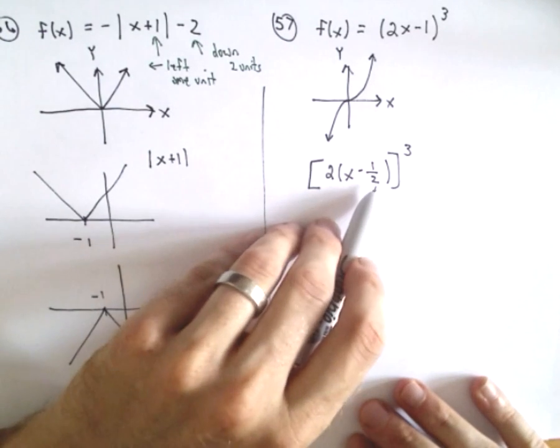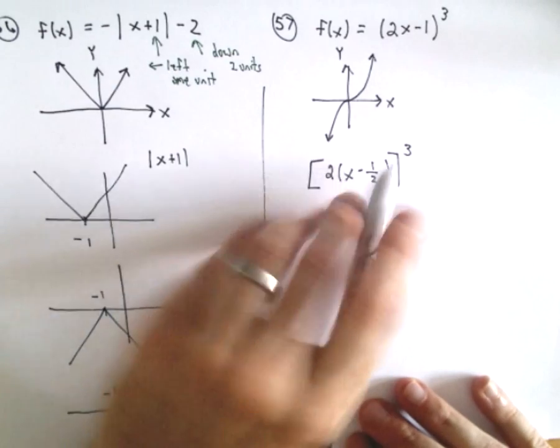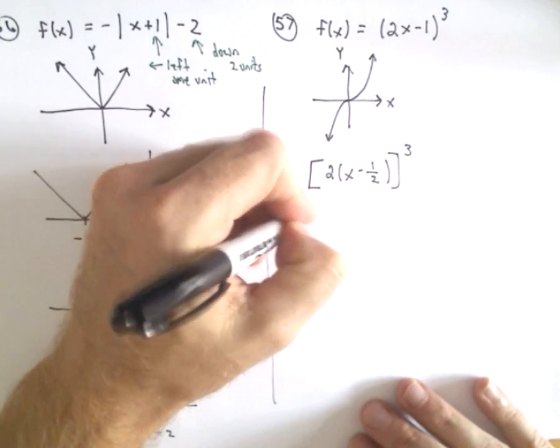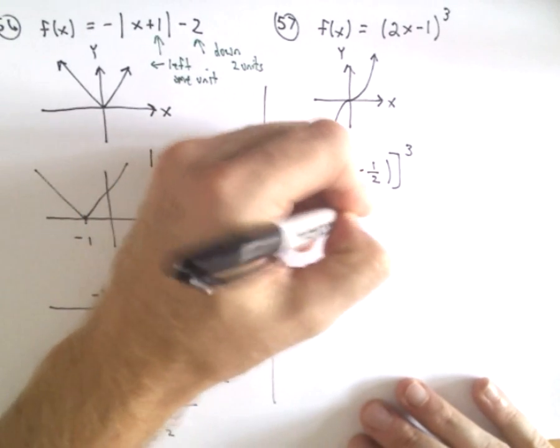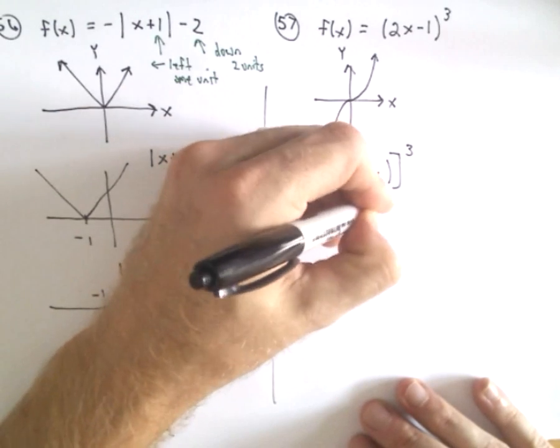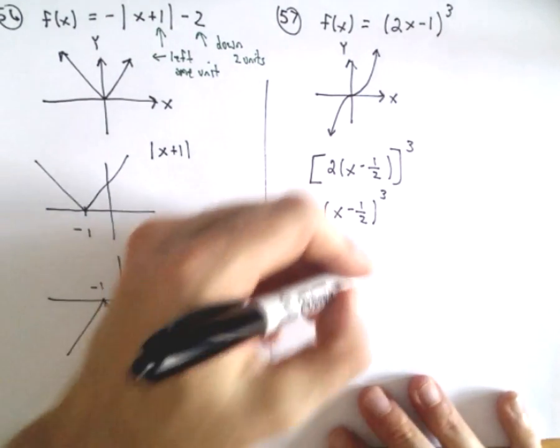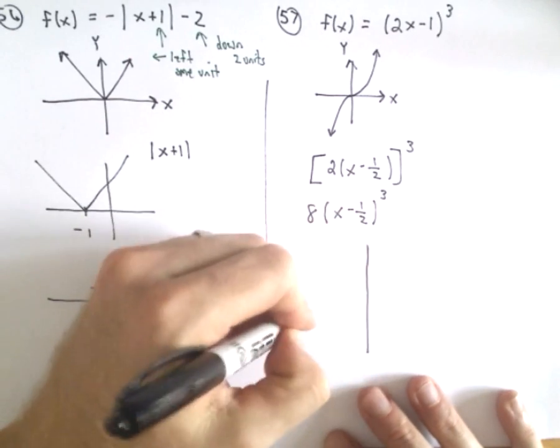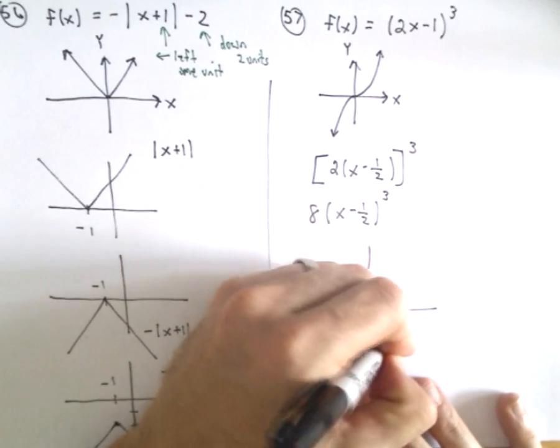But I can factor the 2 out, and I could rewrite this again as 2³, which is 8, and then I have (x - 1/2)³. So now by writing it in this way, I can see that my graph is shifted to the right 1/2 of a unit.